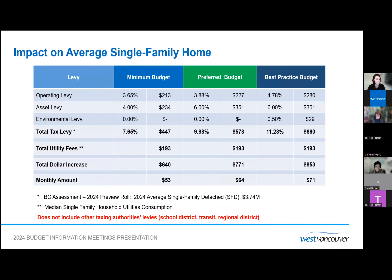Overall, what does this mean for an average single-family home? For a home assessed at $3.74 million with median utility consumption, the three proposed tax rate increase options would result in an additional $640 in district taxes and utility fees under the minimum budget option — equivalent to $53 per month. Under the preferred budget option, it would be an increase of $771, or $64 per month. Under the best practice budget option, an increase of $853, or $71 per month. These numbers do not include other taxing authorities' levies like the school district, transit, or the regional district.